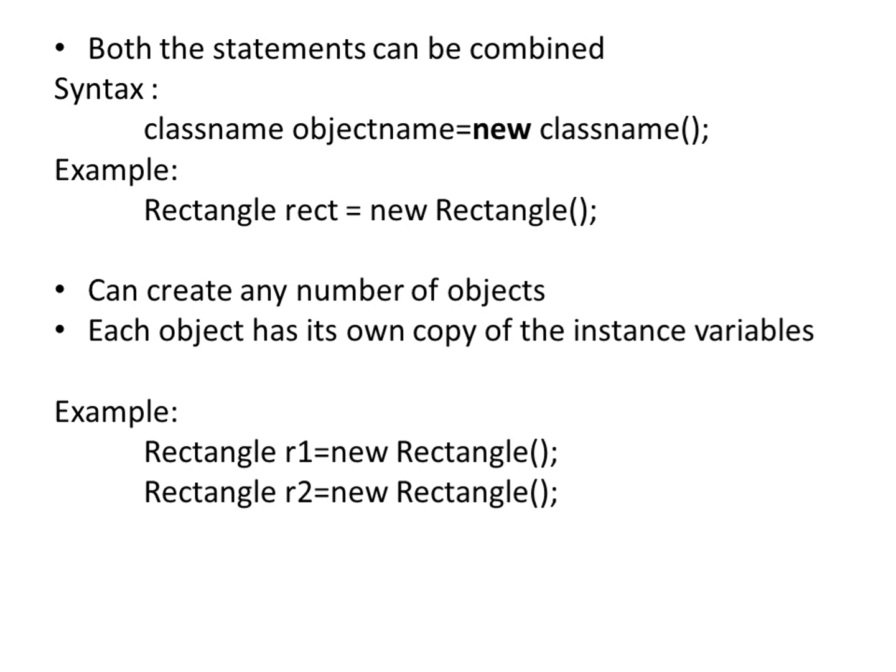In the previous case, we created the object using the class name and then instantiated it separately with the new operator. Here we have combined both statements into one. For example, Rectangle is the class name, rect is the object name, equals new Rectangle. You can create any number of objects — it is not restricted to one, two, or three. Each object will have its own copy of the instance variables, and memory for each object is allocated separately.